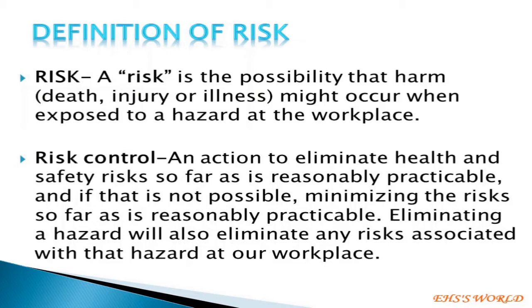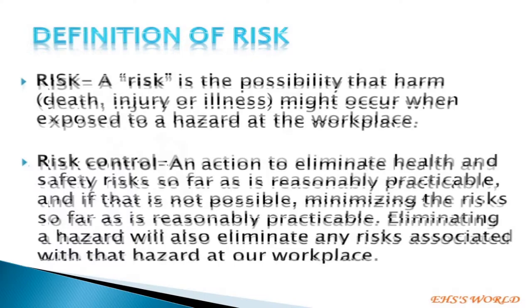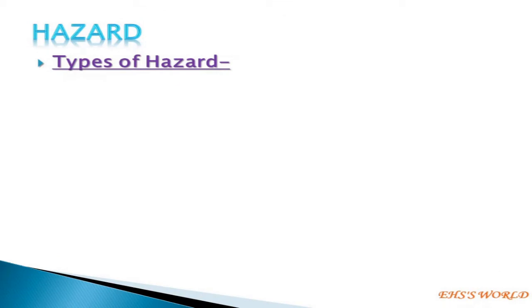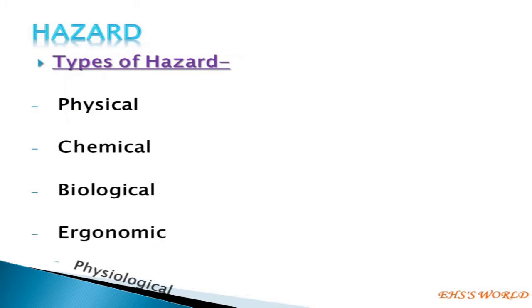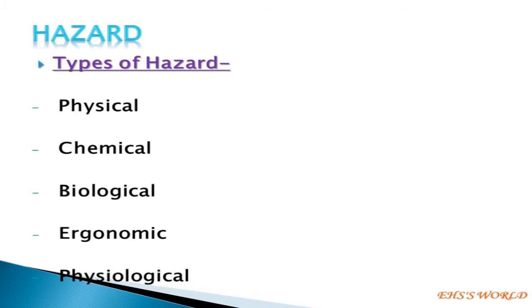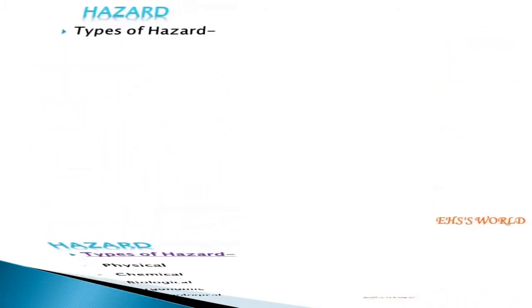Eliminating a hazard will also eliminate any risk associated with that hazard at our workplace. Now we will cover the types of hazards: 1. Physical hazard, 2. Chemical hazard, 3. Biological hazard, 4. Ergonomical hazard, 5. Psychological hazard. In each hazard, we will see the definition.